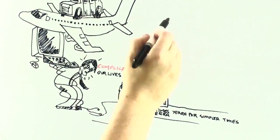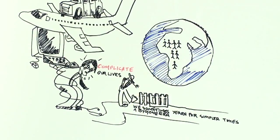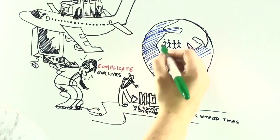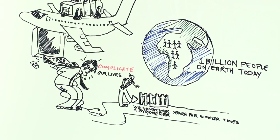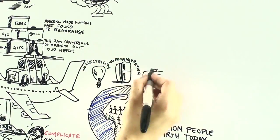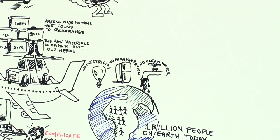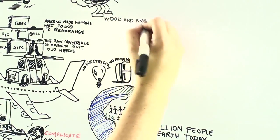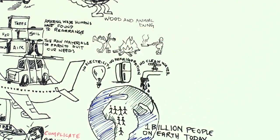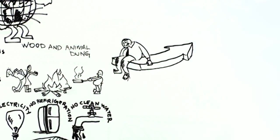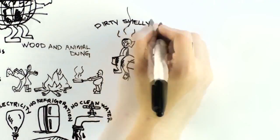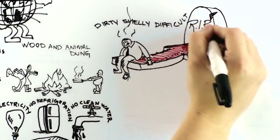Yet that way of life has not been relegated to the dustbin of history. It is still lived by more than one billion people on the Earth today who have no electricity, no refrigeration, no clean water, and who must gather wood and animal dung to use for heating and cooking. For these people, and for the vast majority of human beings that have ever lived, life on this planet has been dirty, smelly, difficult, and short.